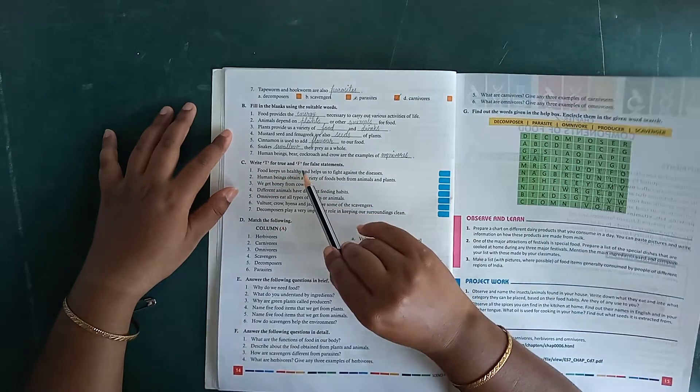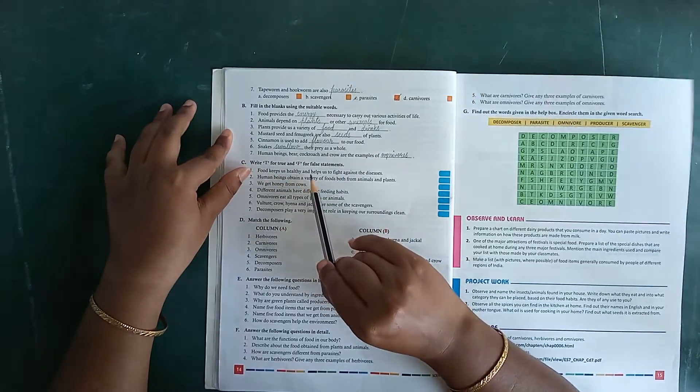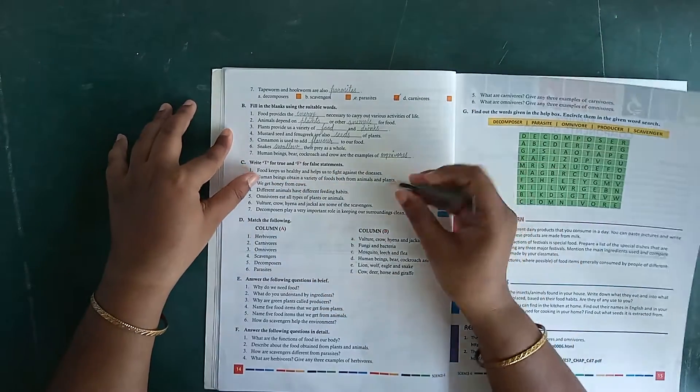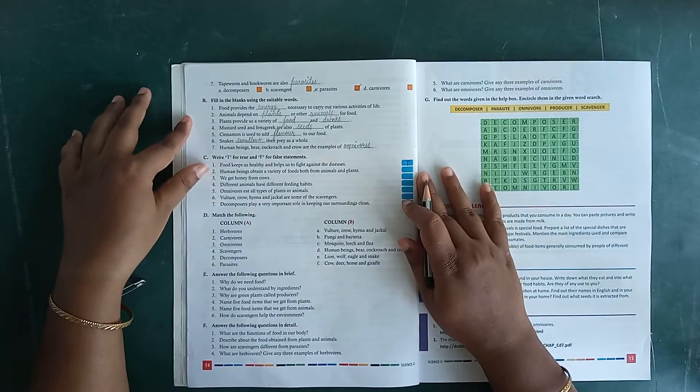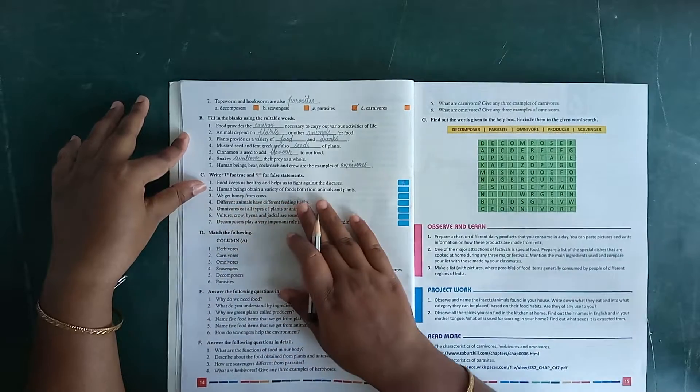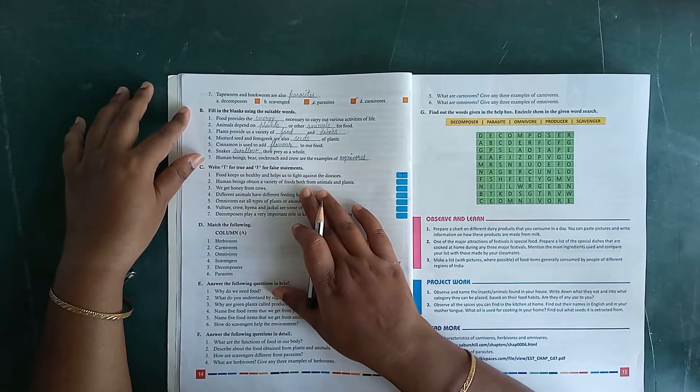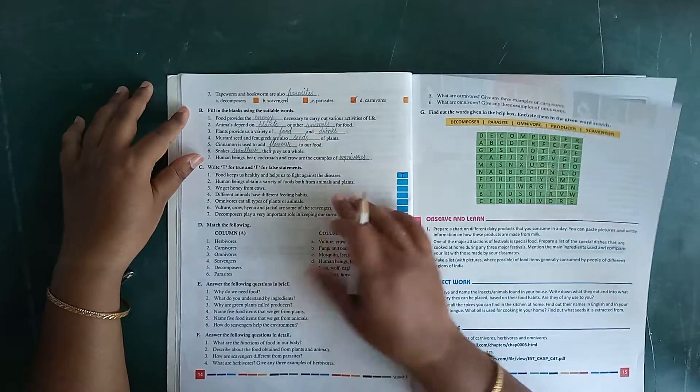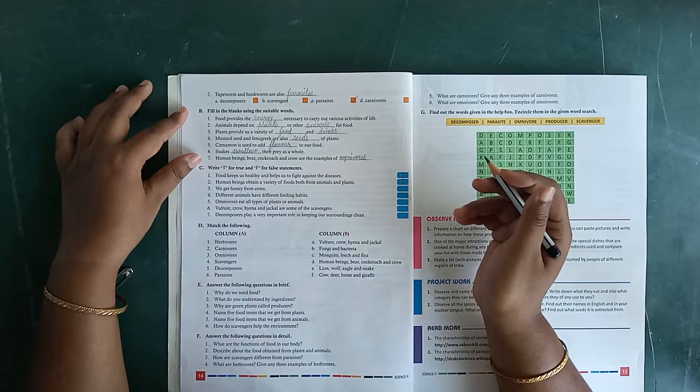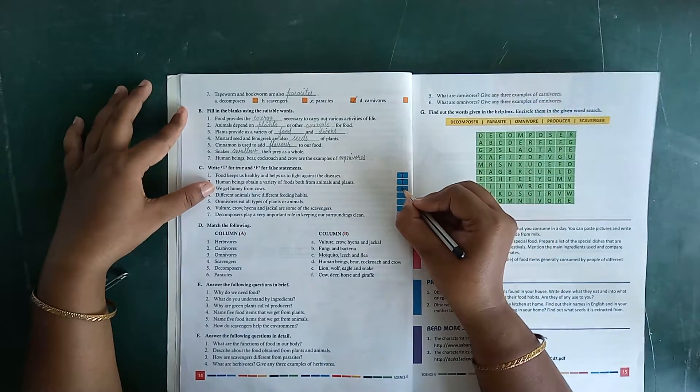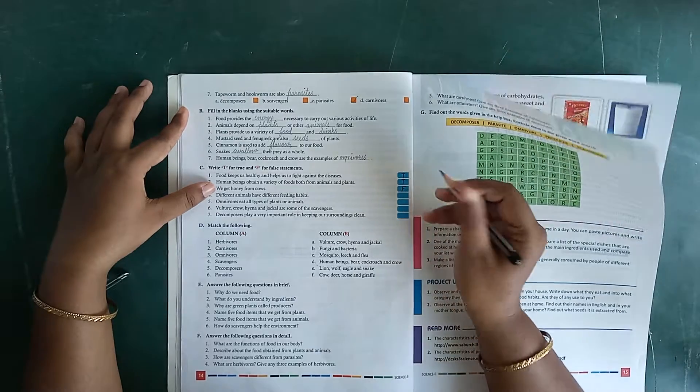Write T for true and F for false statements. Food keeps us healthy and helps us to fight against the diseases. It's true. Write down T. Then, human beings obtain a variety of foods from both animals and plants. Again, true, T. We get honey from cows. False. Honey from honeybees, not from cows, so it's false.